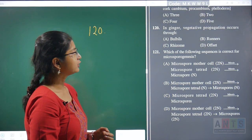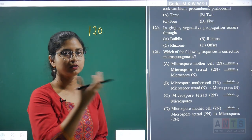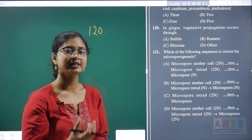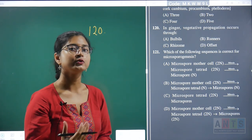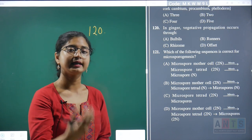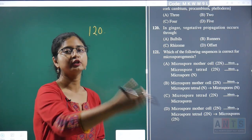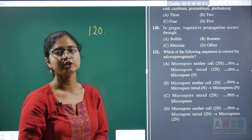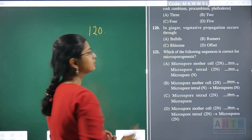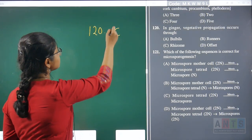Question 120: in ginger, vegetative propagation occurs through — the ginger we consume represents a stem modification called a rhizome. Buds develop on this rhizome, allowing further vegetative propagation. Hence, question 120's correct answer is rhizome, option C.